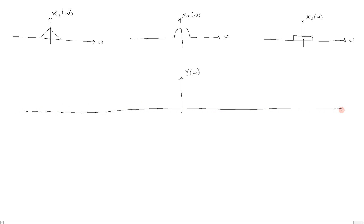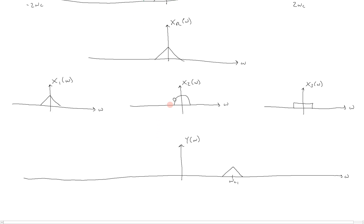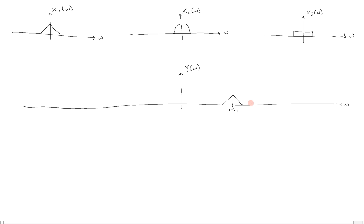The way they're going to look — just to give them distinct symmetrical shapes — the first one will be a triangle, the second a semicircle, and the last a rectangle. The idea is to transmit all three of these and be able to recover each one individually. This is exactly what happens with radio stations, where all the stations are being transmitted simultaneously but you choose which one to listen to. So Y(omega) is going to consist of all of these together, but at various carrier frequencies: the first placed at omega_c1, the second at omega_c2, and the third at omega_c3. We also have to keep in mind the components on the negative side of the spectrum for symmetry. We can pack as many signals in here as we really want, and all of them are being transmitted simultaneously.